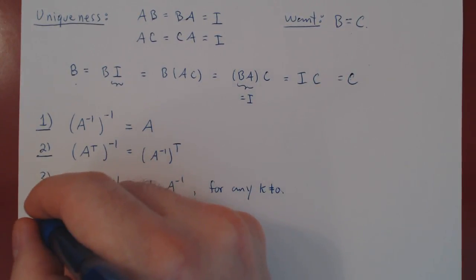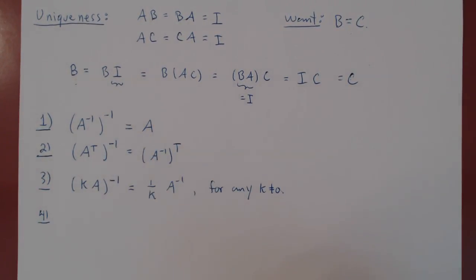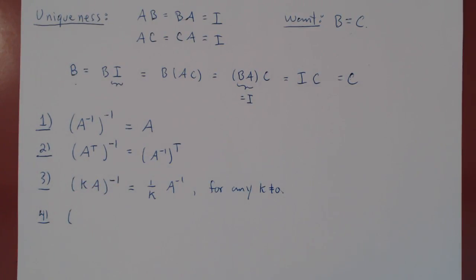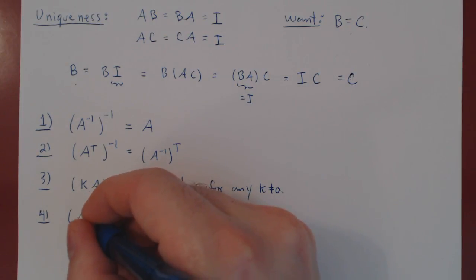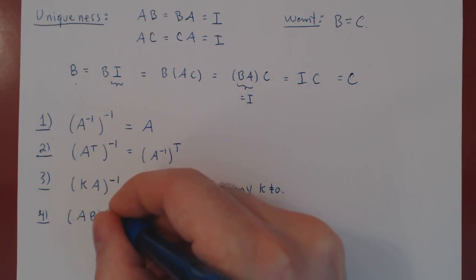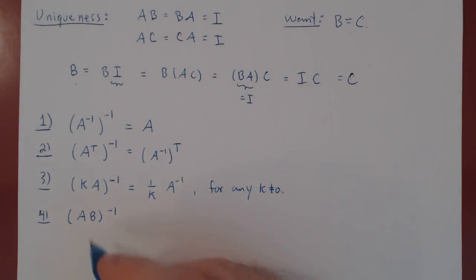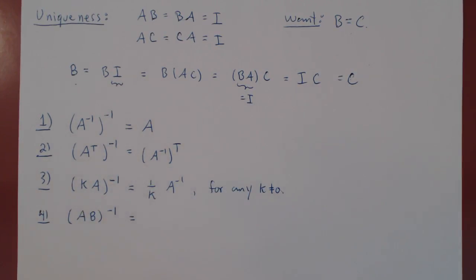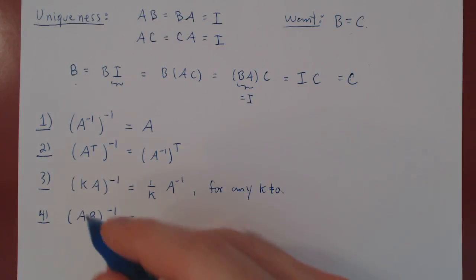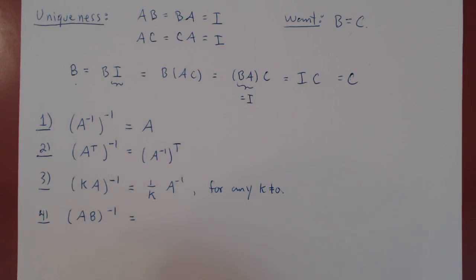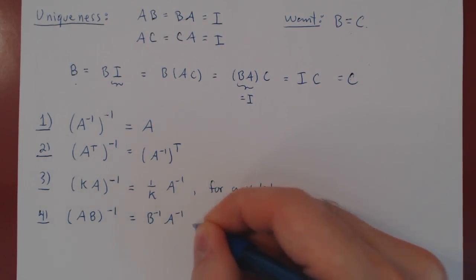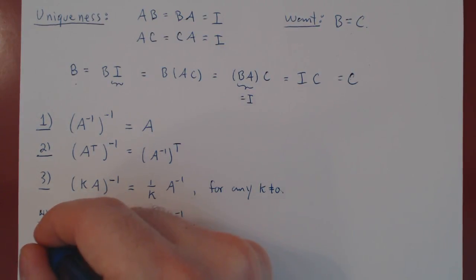Property 4 is a bit more interesting. What if you have two invertible matrices A and B — is their product invertible? The answer is yes. If A and B are both invertible, A times B is invertible, and the inverse is the inverse of each matrix but in reversed order. It will not be A inverse times B inverse, but instead B inverse times A inverse.